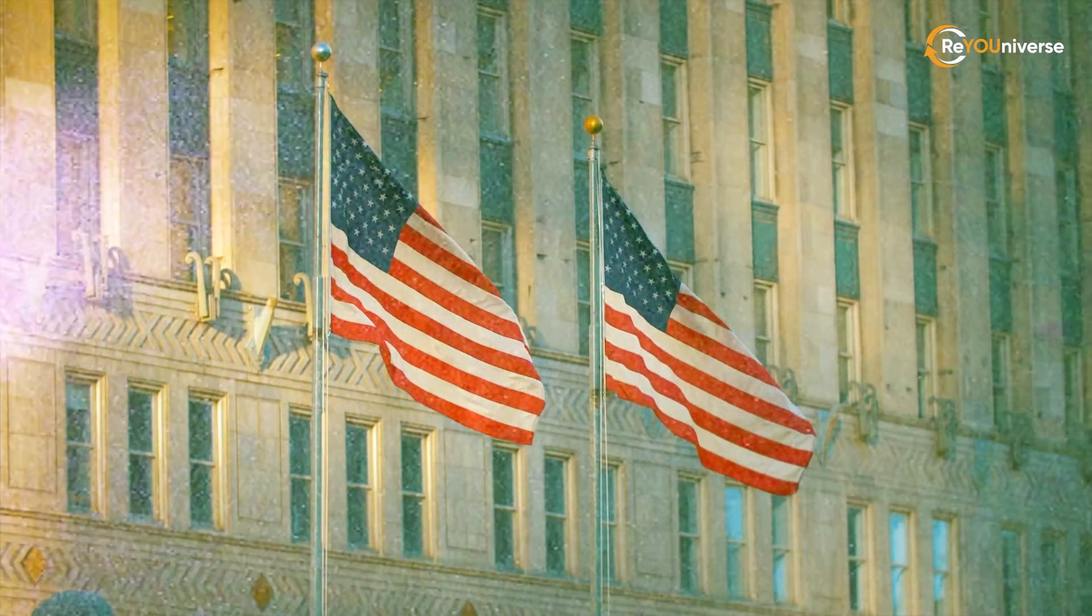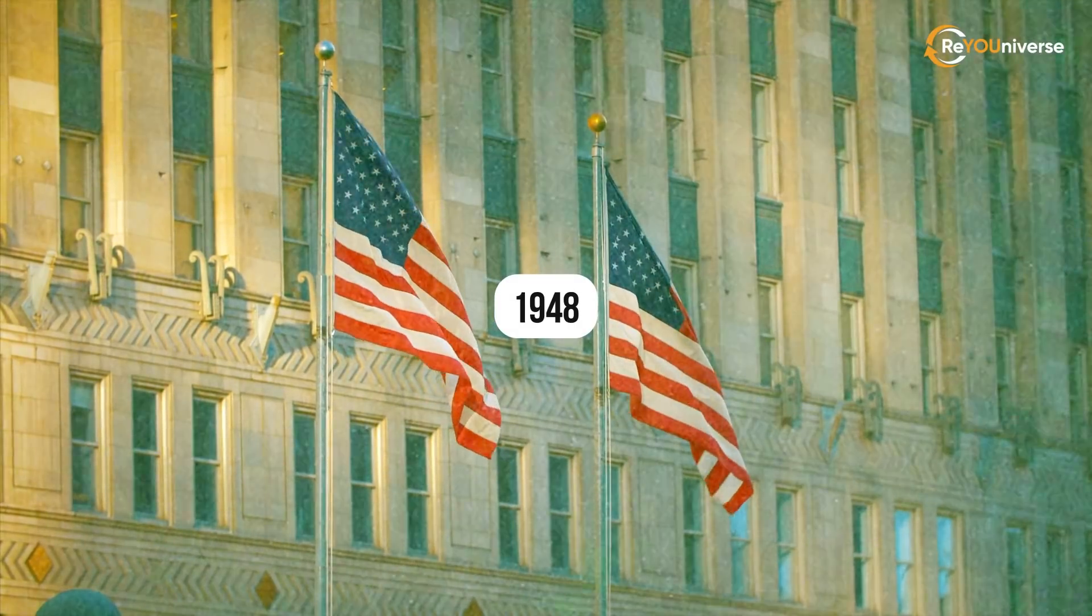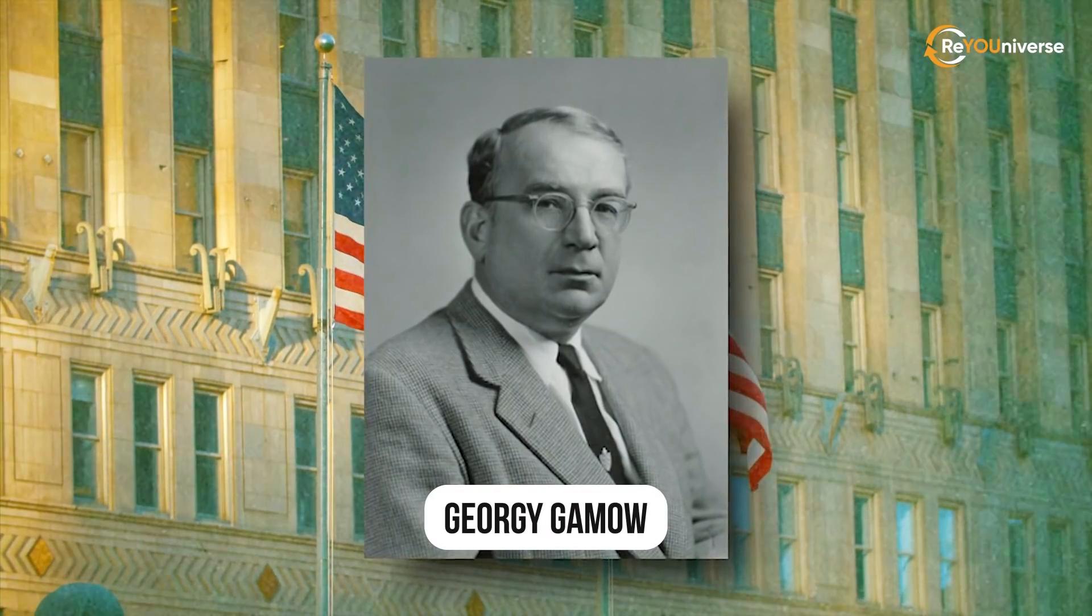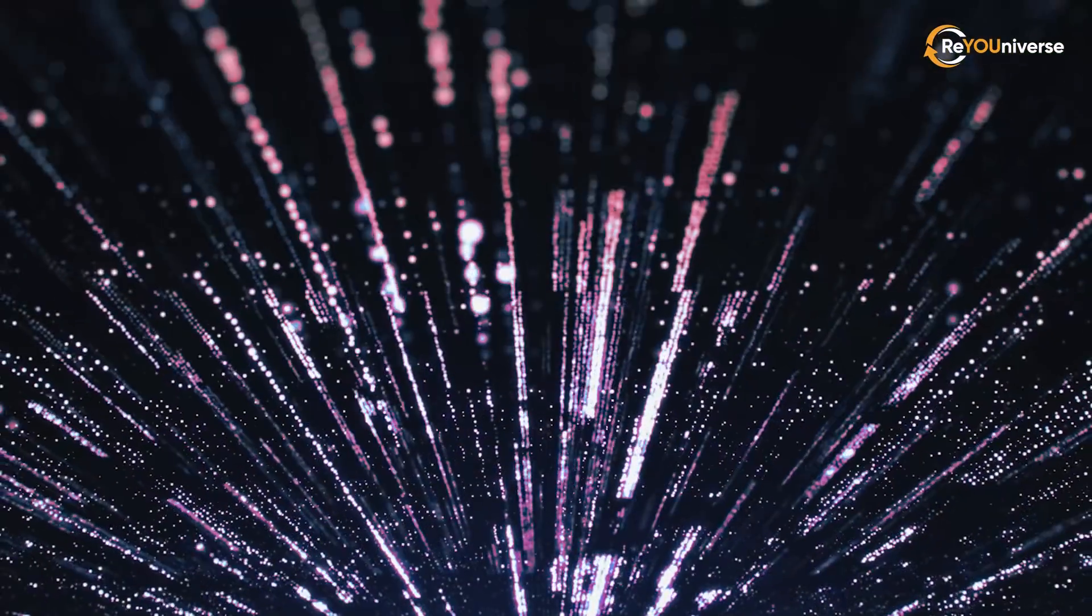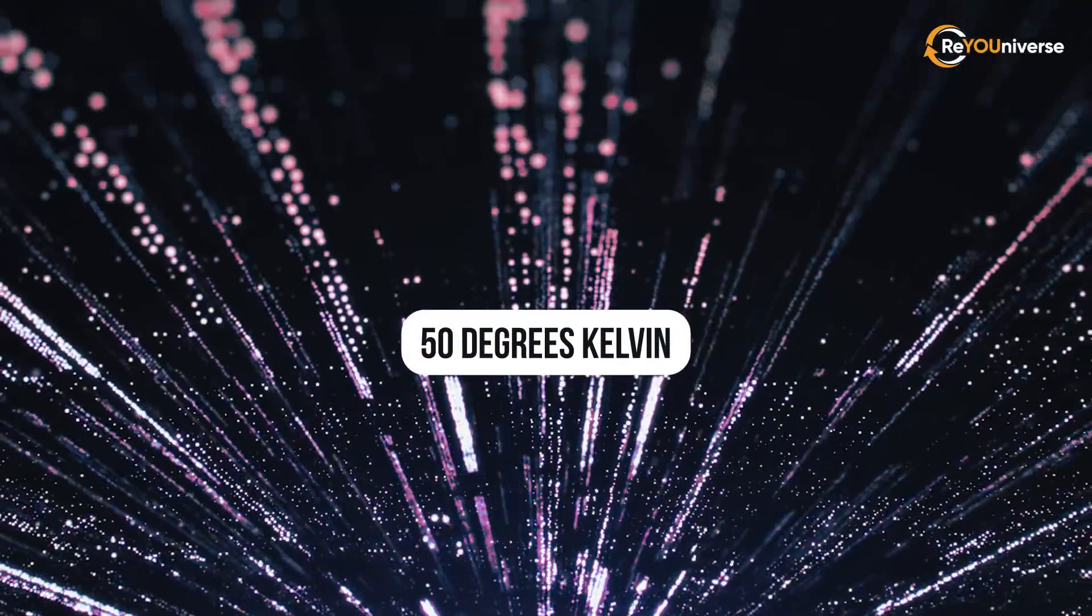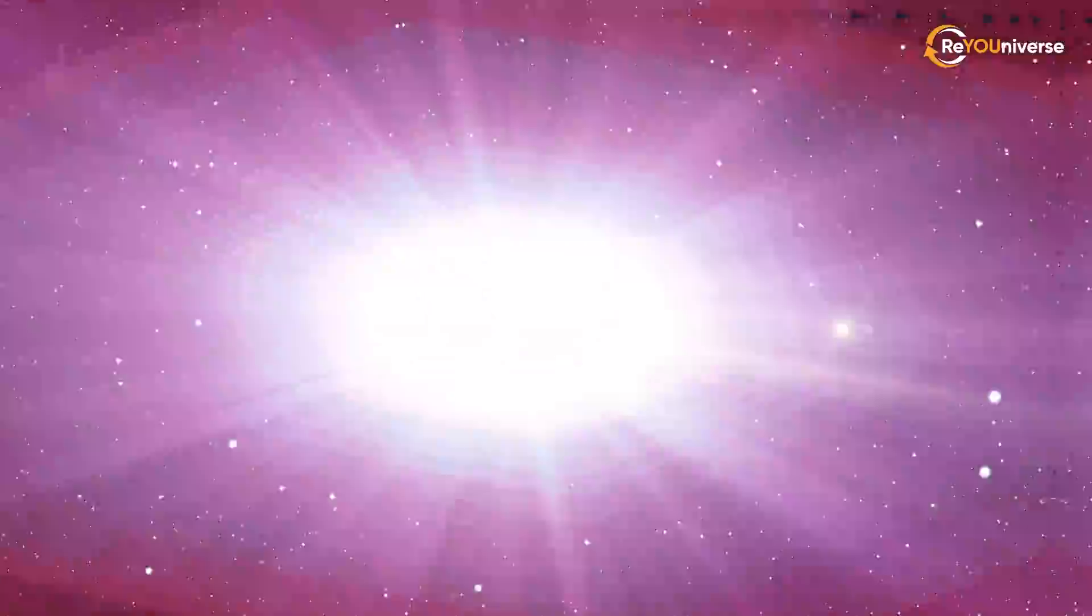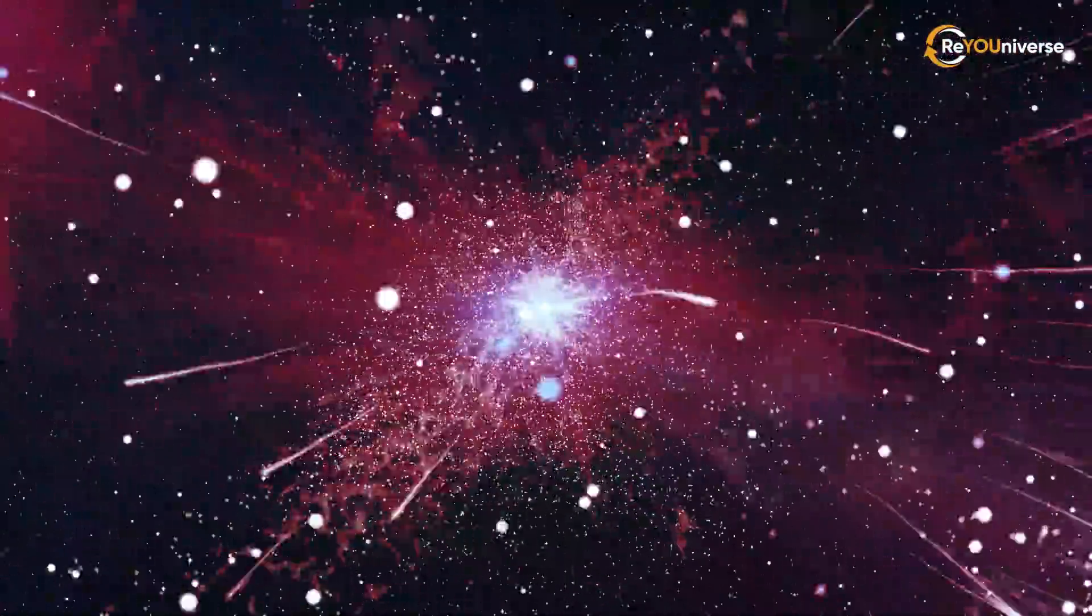This story began in 1948, when a Russian-born American physicist, Georgi Gamow, calculated that radiation with a temperature of about 50 degrees Kelvin, or minus 267 degrees Celsius, should have formed during the Big Bang that gave rise to the universe.